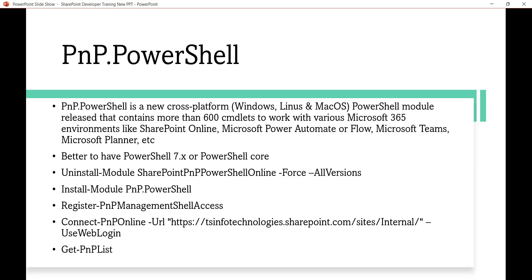The new module is PNP.PowerShell, released by Microsoft, which we can use to work with SharePoint Online. Not only SharePoint Online — we can also work with Power Automate, Microsoft Teams, Planner, and more. This is a cross-platform library, meaning we can use it on Windows, Linux, or Mac OS. Previously the SharePoint Online module only connected to SharePoint Online, but this new one works with other Microsoft 365 and Office 365 platforms as well.